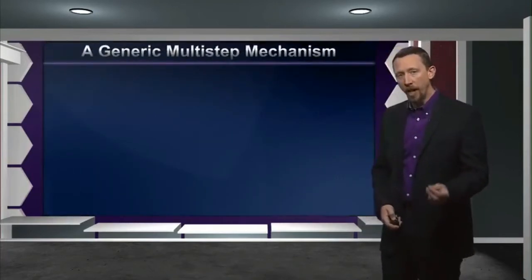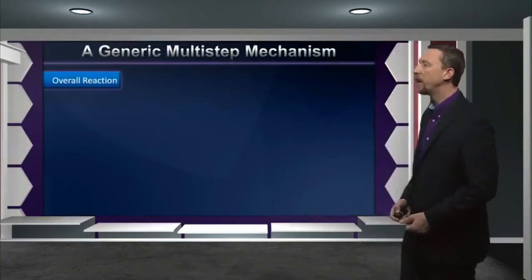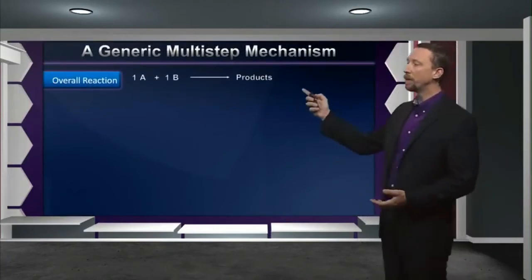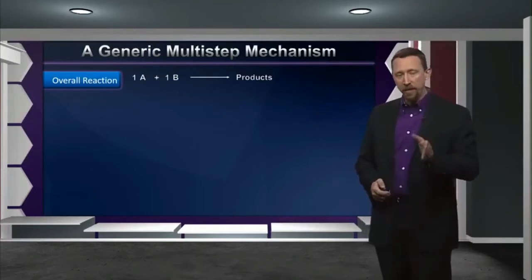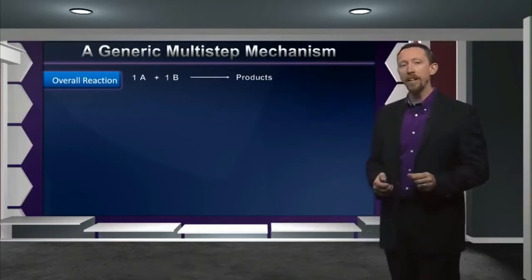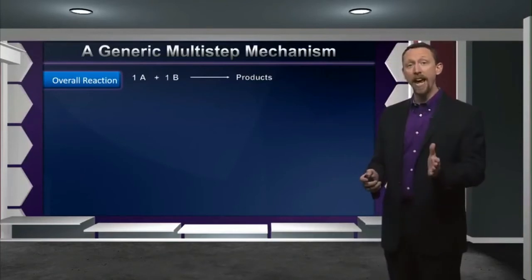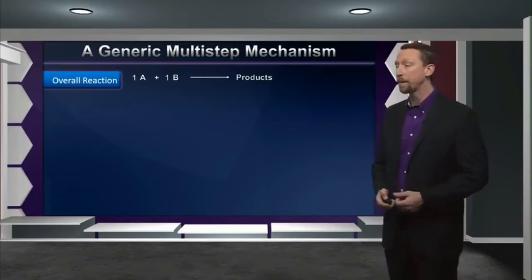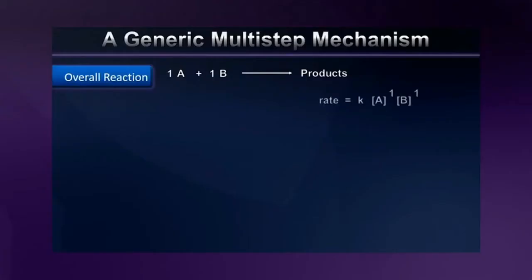When we extend our everyday analogy of multi-step processes into the realm of chemistry, we can start to model more complicated reactions than those which we did in our previous lectures on rates. Let's take the example of a generic reaction mechanism in which we have two reactants, A and B, which come together somehow to form products. Previously, we always assumed that when a reaction like this took place, it was an elementary reaction in which A collides with B, and the product is formed in a single concerted step. When this is the case, we expect the rate law for this reaction to be K, the rate constant, times the concentration of A raised to the first power, times the concentration of B raised to the first power. Simple enough.